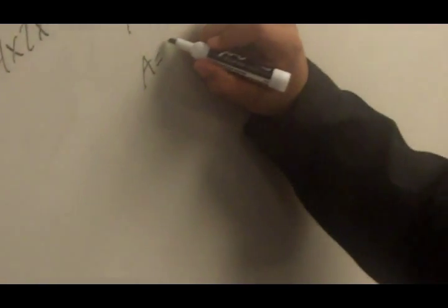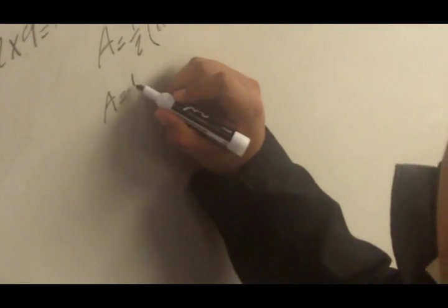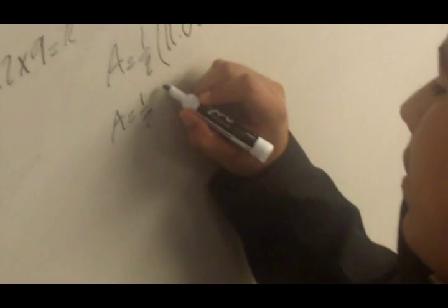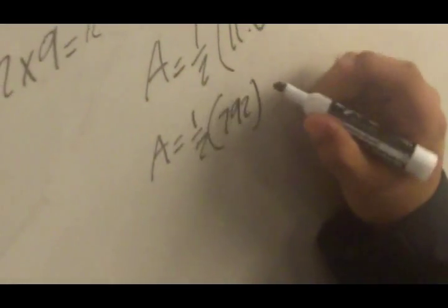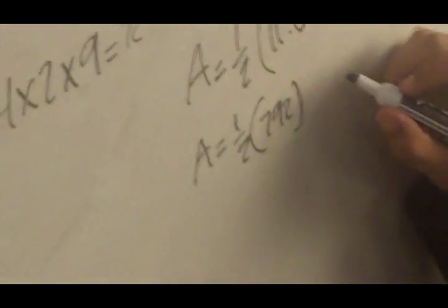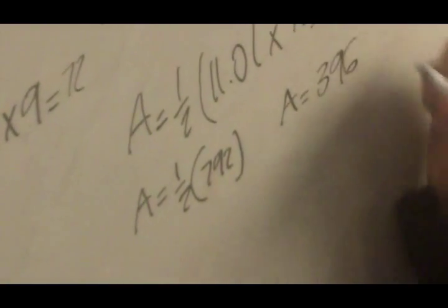I get area equals one-half, 792 because I rounded. And then I divide that by 2, so the area equals 396.